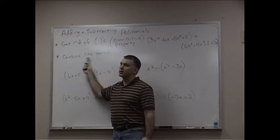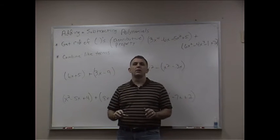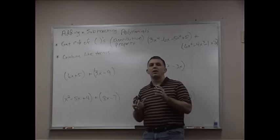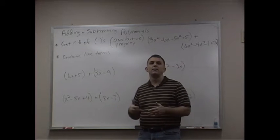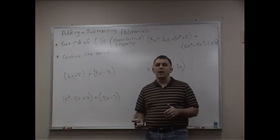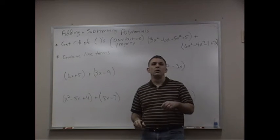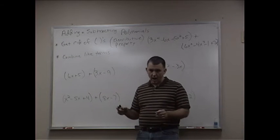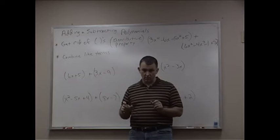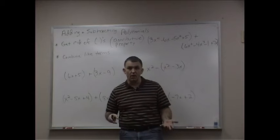The other thing that we want to do is we want to combine the like terms. That means that the variables are exactly alike, not only in letter, but also in value of the exponent. So you can't put together an x to the second and an x to the fourth. You can only put x to the second and x to the second together, or y's and y's. The letters have to be identical before you can combine the coefficients or the numbers that are in front.